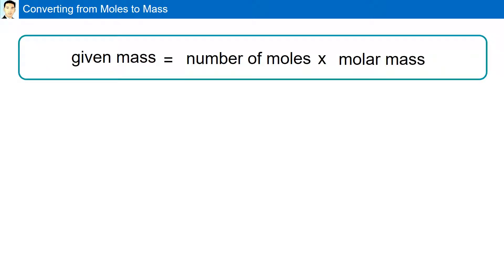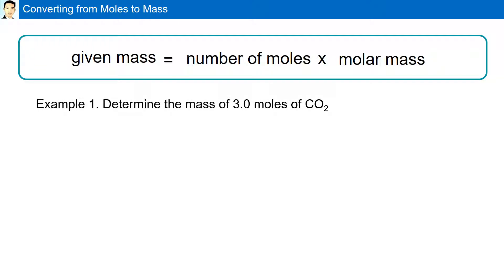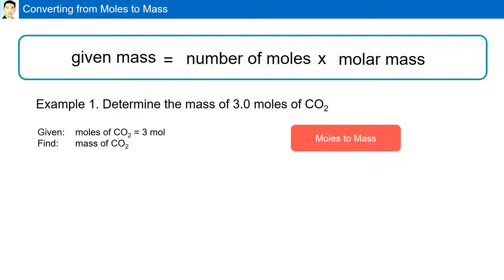Converting from moles to mass. If we are given a specific amount of moles, we can multiply that by the molar mass of the substance to get the mass required. For example, determine the mass of 3 moles of CO2, carbon dioxide. We are given 3 moles and we are asked to find the mass — we need to go from moles to mass.